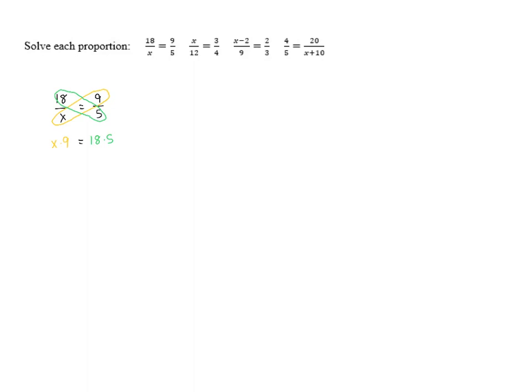So on the left, x times 9 is 9x. On the right, 18 times 5 is 90. So we've got 9x equals 90. If we divide both sides by 9 to get x alone, that gives us x equals 10, which is the solution.